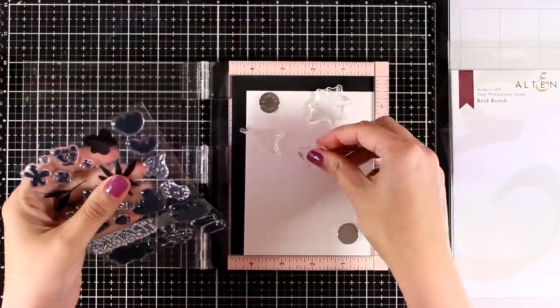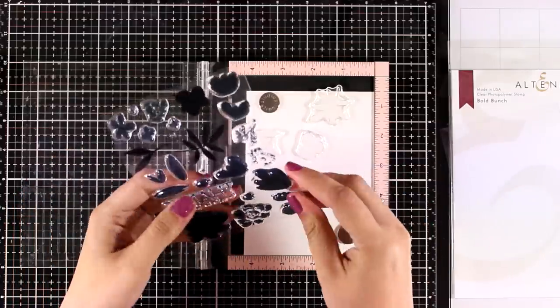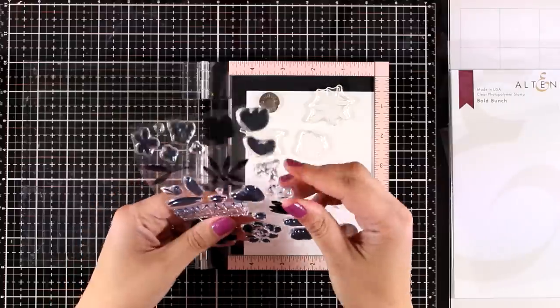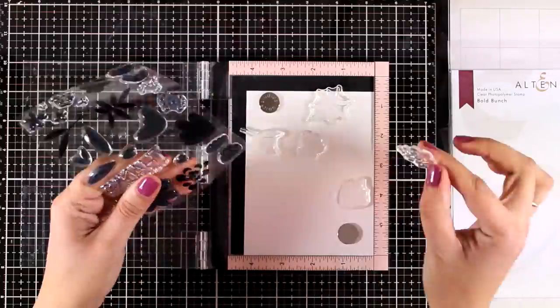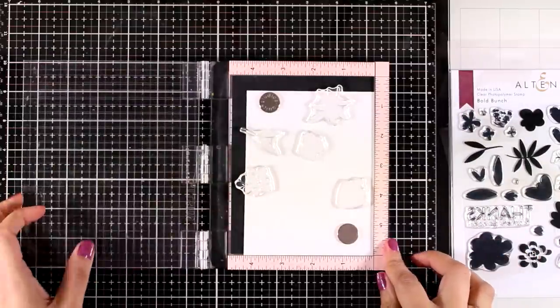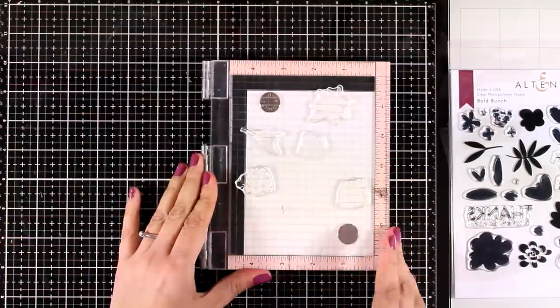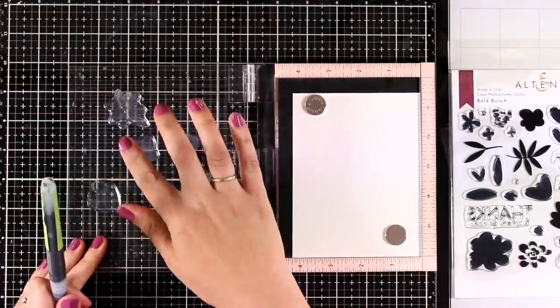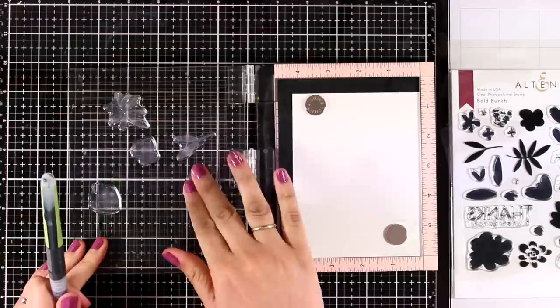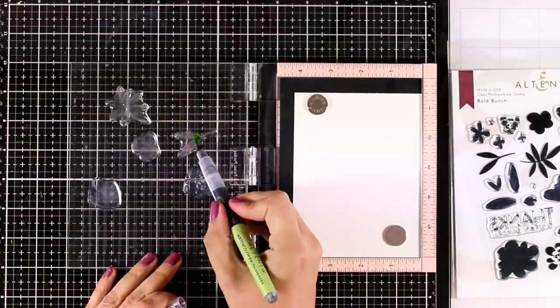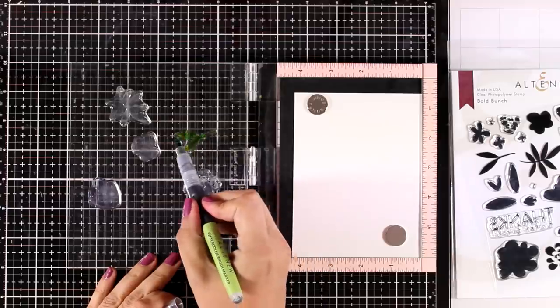So I have my Misti here and inside I have a piece of watercolor paper. I am working on the flat side of the watercolor paper and I'm going to lay on top some of the flowers and the leaves from this stamp set. The stamp set that I'm using is called Bold Bunch and it comes with lots of flowers and leaves that are all solid, which is really important for this technique. If you haven't used solid stamps before it's always nice to prep them just by rubbing them with your finger or with an eraser.